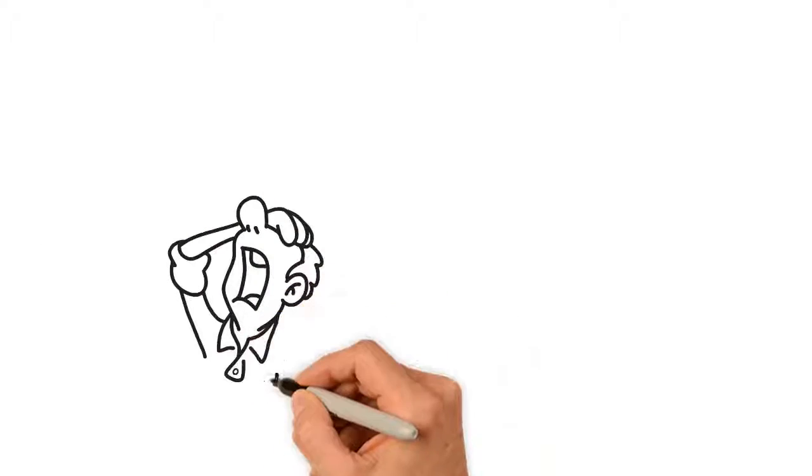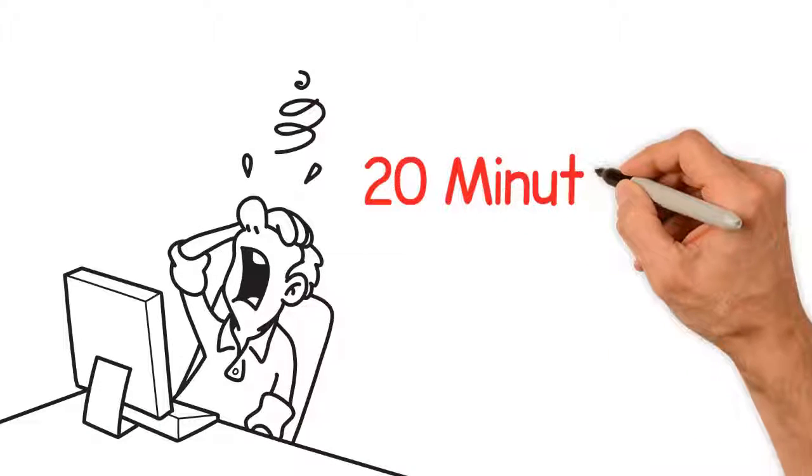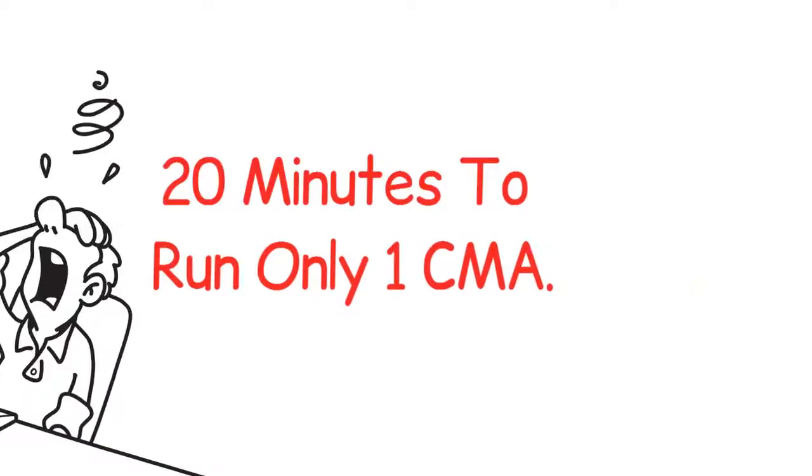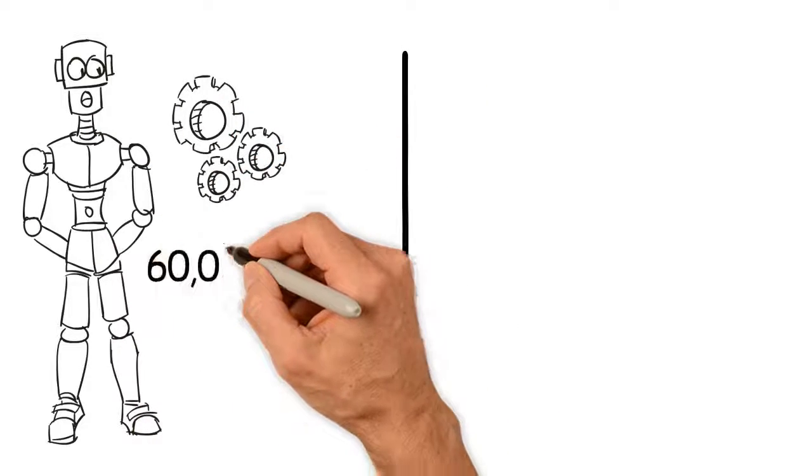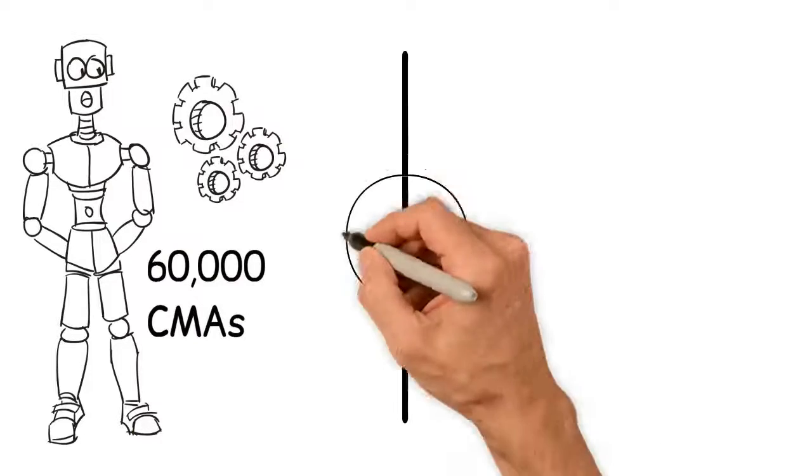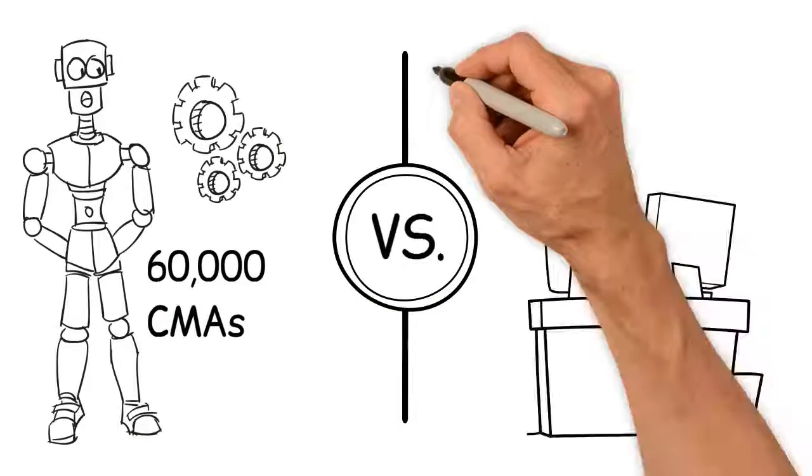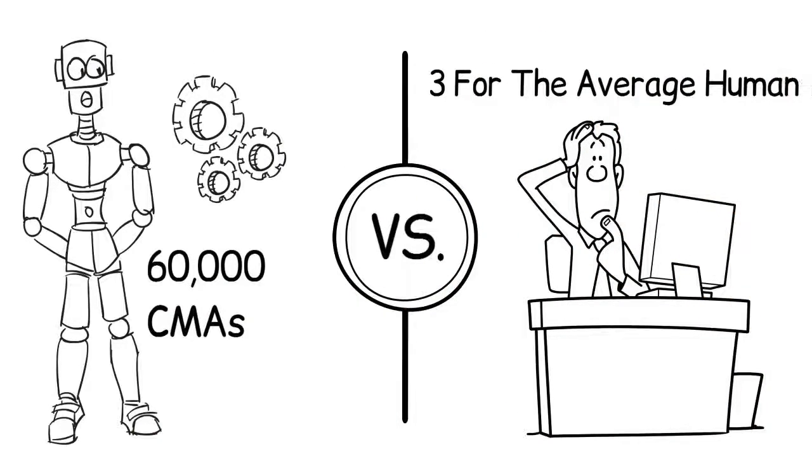An average human with experience running CMAs takes approximately 20 minutes to run only one CMA. When compared side by side, this means that in one hour, MLS DealFinder's automated CMA system can run 60,000 CMAs versus 3 for the average human.